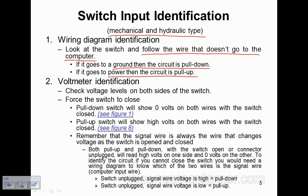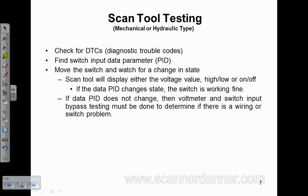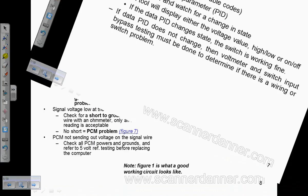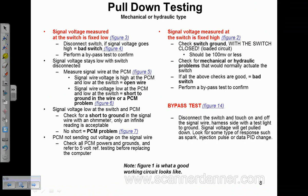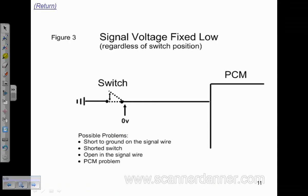Number two, we can actually identify a switch input using a voltmeter. Okay, we're starting into the testing section now of switch inputs. Starting at the left, signal voltage is fixed low. The first step that you would do on a pull-down design is disconnect the switch. Well, let's go to figure three first.